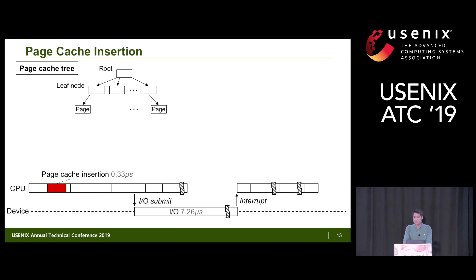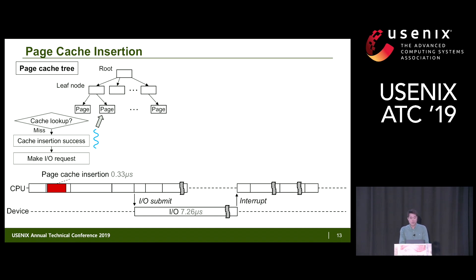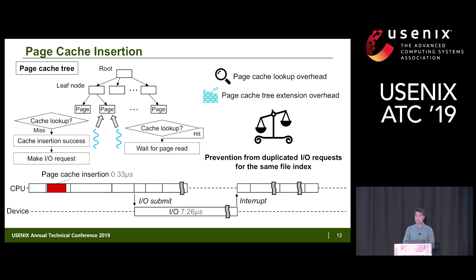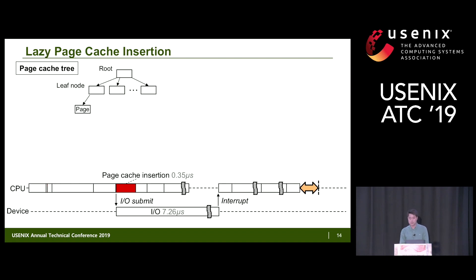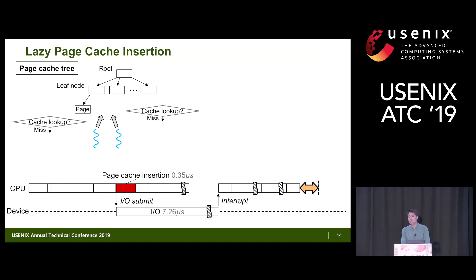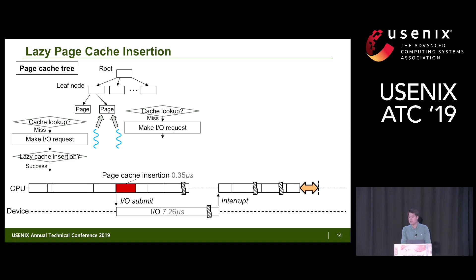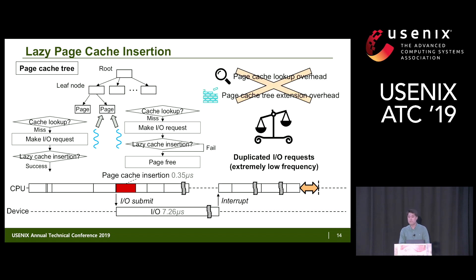Our next focus is page cache insertion. In the Linux kernel, when a page is missing, a new page is allocated and indexed in the page cache before the I/O request is issued, to prevent other threads from issuing duplicate I/O requests for the same file index. Since our goal is to reduce I/O latency, we move this operation to after submitting the I/O command. If two or more threads miss the same file page, only one thread succeeds in inserting the page; others are freed. Through evaluation, we found that duplicate I/O requests are extremely rare in practice.